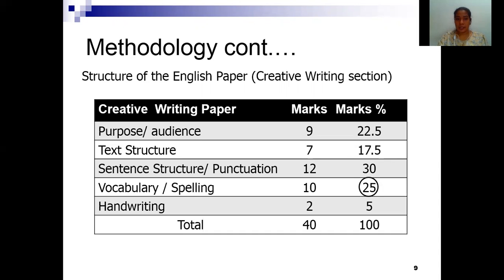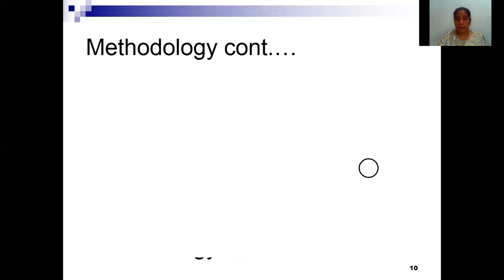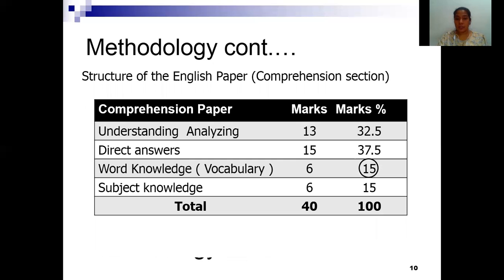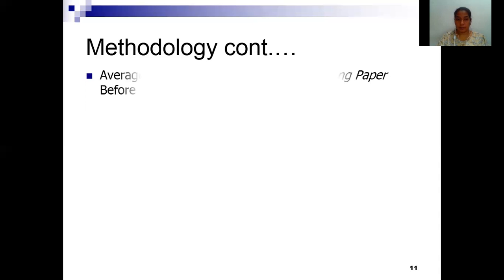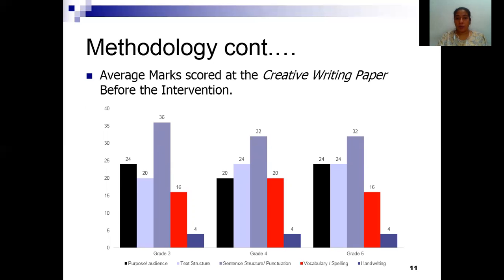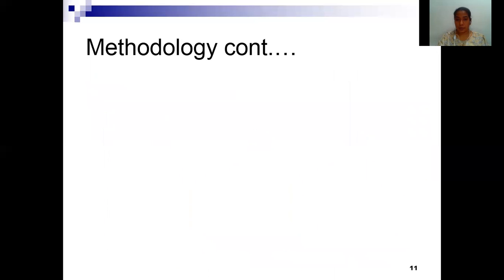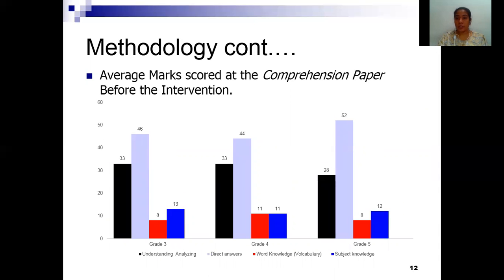A detailed analysis of the structure of the English paper was done. As you can see, the creative writing section consists of 25% marks allocated for vocabulary and spelling. In the same way, the comprehension section also allocated 15% of its marks for word knowledge or vocabulary. The analysis of the creative writing papers showed that students scored fewer marks in the vocabulary and spelling component, highlighted through the red bars. Similarly, their comprehension papers also showed that they had scored fewer marks in the vocabulary component.